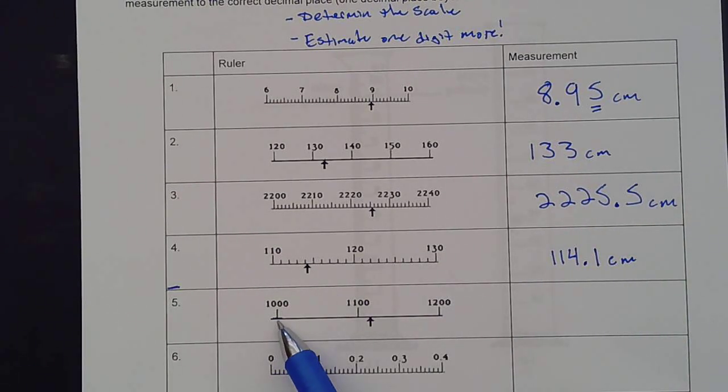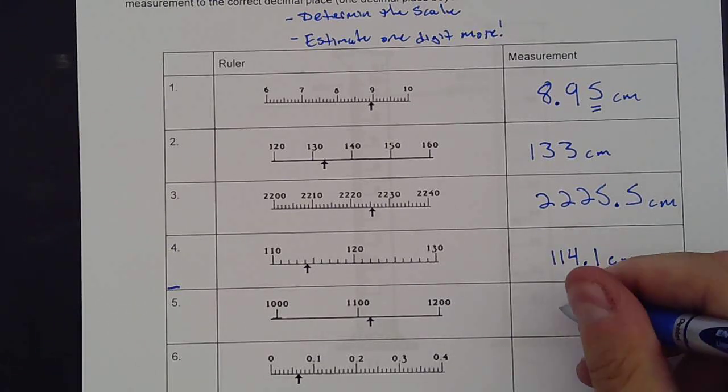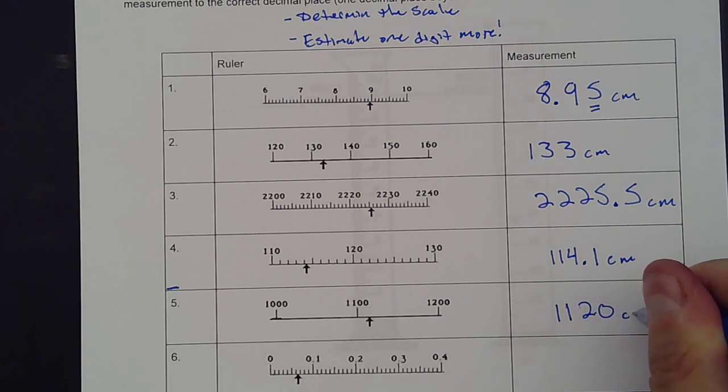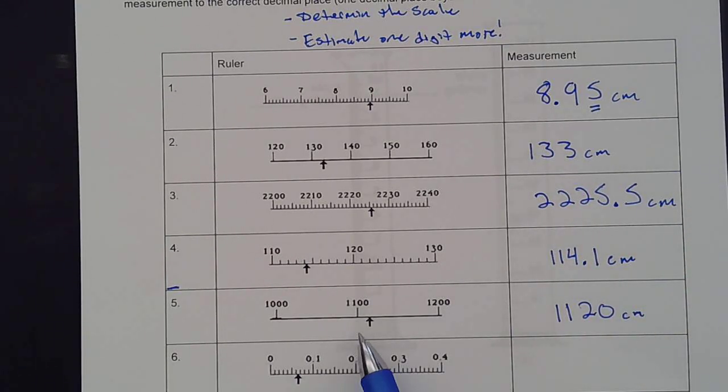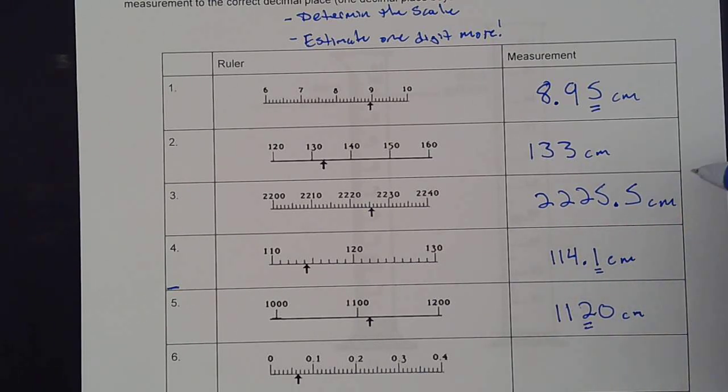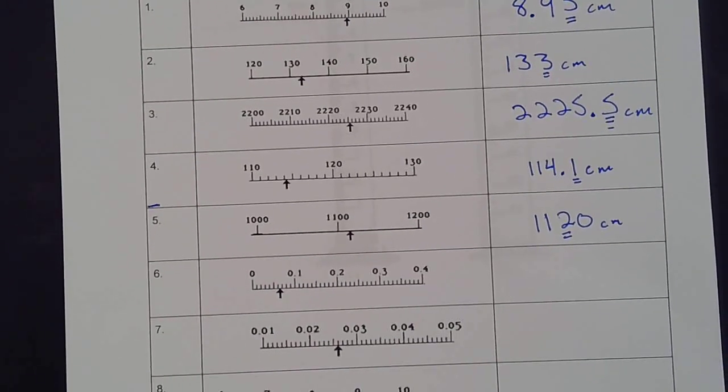Over here we have 1,000, 1,100, and 1,200. This is going up by hundreds. So the one underneath the hundreds is a ten. I have 1,100, and let's call that 1,120. Just breaking it down, this is my estimated digit. I'm always going one further than what the scale will allow me to do.